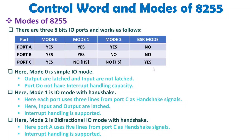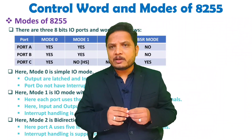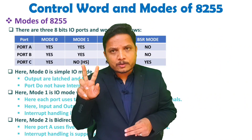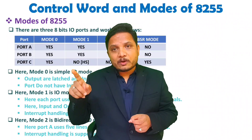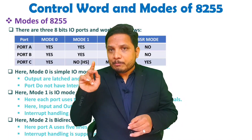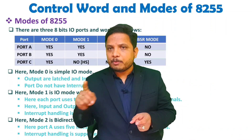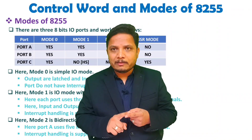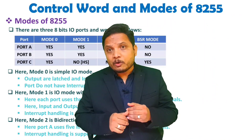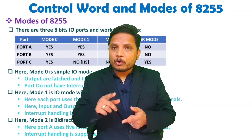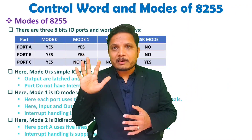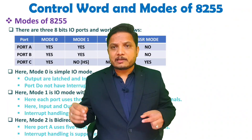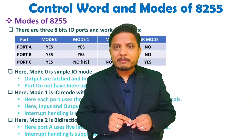To summarize: there are two types of modes — IO and BSR. BSR mode is for port C only. In IO mode, mode 0 is applicable to all ports. Port A handles all IO modes (0, 1, and 2). Port B handles only mode 0 and mode 1. Port C's role is to provide handshaking signals — three lines for mode 1 and five lines for mode 2. If any confusion remains, post it in the comment box and I'll be happy to help.